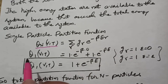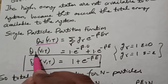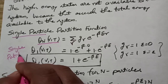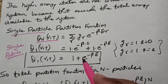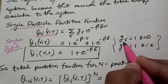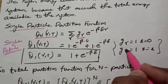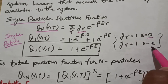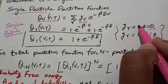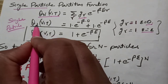First we calculate the partition function for a single particle, q1. Since the system is non-degenerate, both the ground state and the excited state have degeneracy factor g equal to one. So the formula expands to g1 times e to the power minus beta times E1, plus g2 times e to the power minus beta times E2.